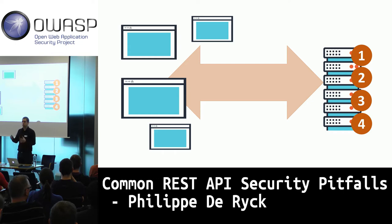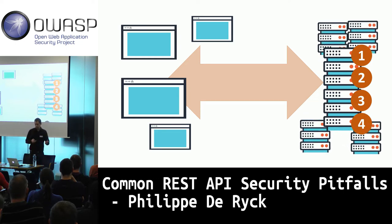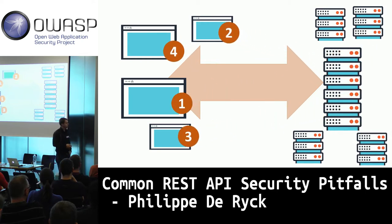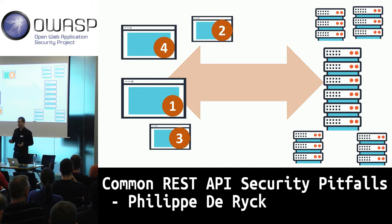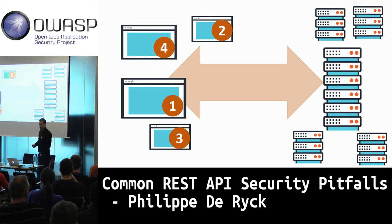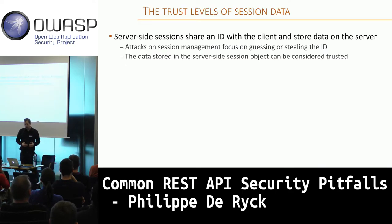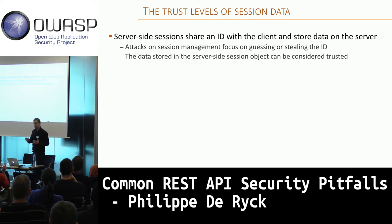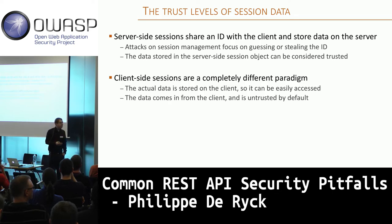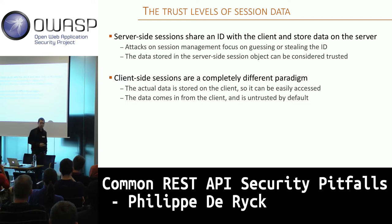In an API world, people don't like keeping state on the server because if you have multiple servers, you have to decide which server handles which request. So people thought: what if we move our session information to the client? Then things become easier — you don't have to decide which call goes to which server, you can spin up additional servers and everything keeps working. You have a stateless API, which is awesome. But the security properties of what we're doing actually change quite a bit.